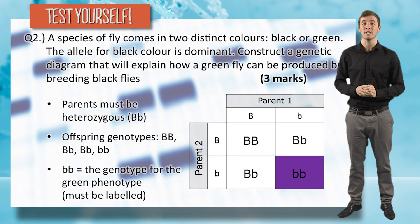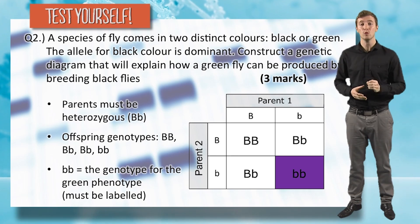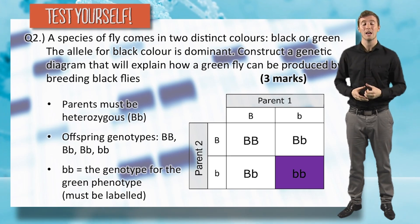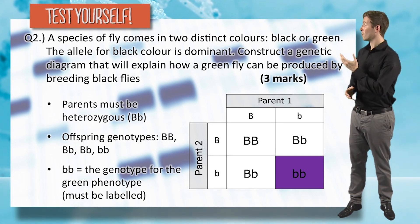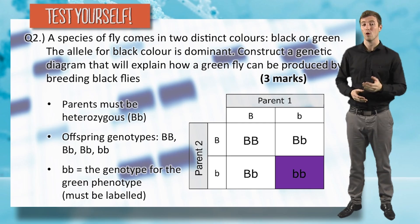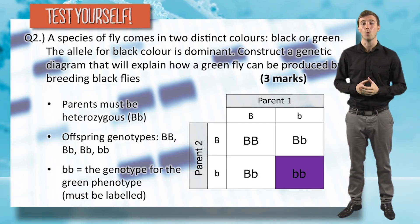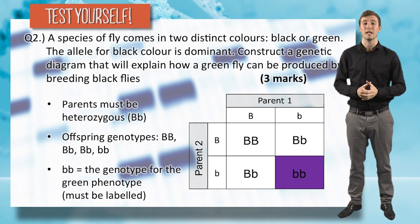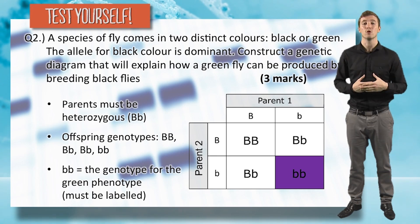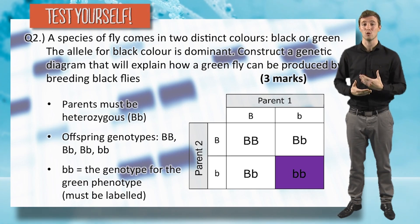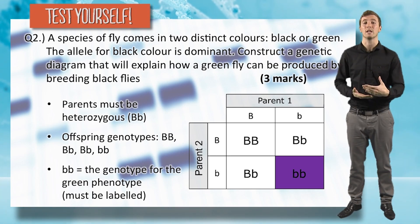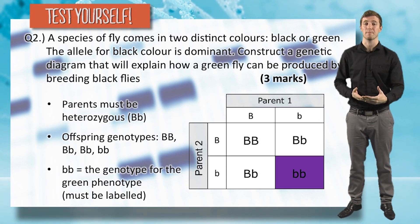The next mark was for showing that you understood the diagram — that the genotype of two lowercase b's, or two recessive alleles, was the genotype of a green fly. This communicates that you knew that genotype would cause the green phenotype.